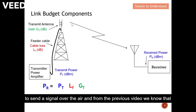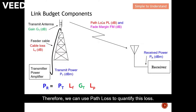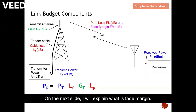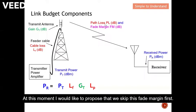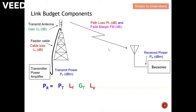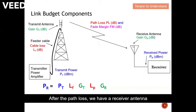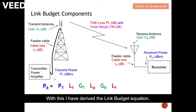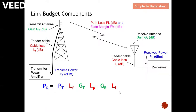From the previous video we know that there will be loss when we transmit over the air, so we use path loss to quantify this loss. I would like to skip the fade margin for now — on the next slide I will explain what fade margin is. After the path loss, we have a receiver antenna, denoted as Gr. And last but not least, typically an antenna is linked to a receiver via a cable, which I denote as Lf. With this I have derived the link budget equation.